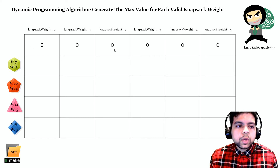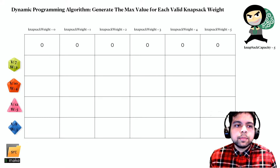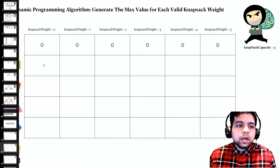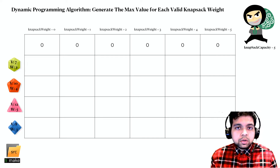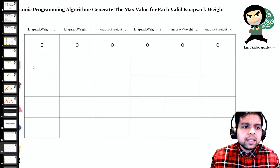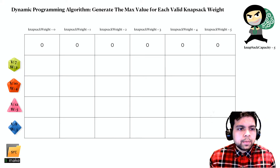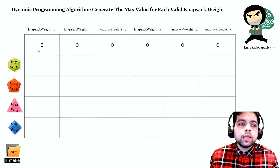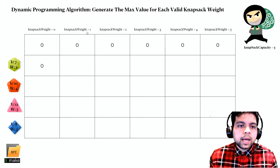Starting with the first gem row: for a knapsack weight of zero, we cannot take this gem since it weighs 2 pounds, so we copy the previous item's value at this weight — zero. Same for knapsack weight of one: we cannot take this gem, so we again take the previous item's value, which is zero.